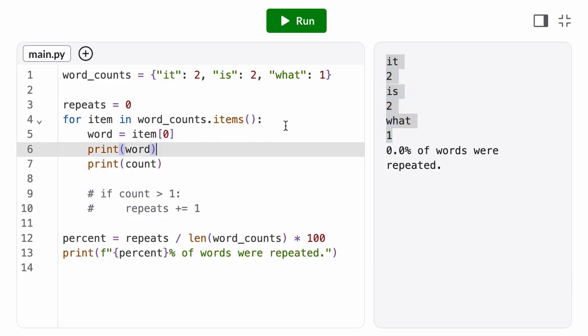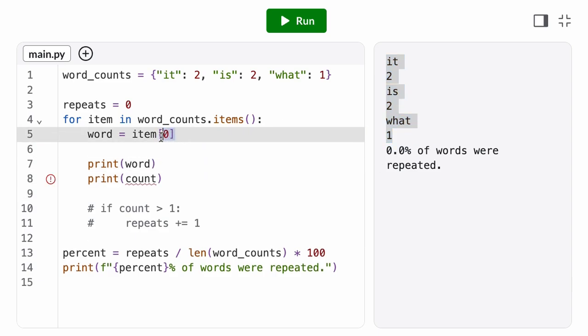Fortunately, Python gives us a shortcut called variable unpacking. We can unpack an iterable type, like a tuple or a list, into several different variables, all in a single assignment. So, we can unpack our item tuple into its key and value, by putting a comma in between the two variable names. Word will contain the first element, and count will contain the second. And to make this even easier, we can inline this unpacking into our for statement.